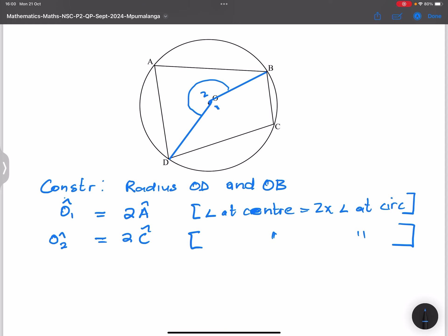So if I look at O1 plus O2, this would be equal to 360. These are angles around a point.